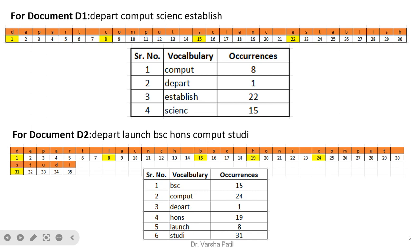For document D1, four words occur at locations 8, 1, 22, and 15 respectively. Vocabulary is generally maintained in ascending alphabetical order. For document D2 — department, launch, BSc, honors, compute, study — we find out the character location of each word. Vocabulary is again maintained in ascending sorted order, storing the occurrences of each particular word. In this way documents D1 and D2 are stored for inverted file indexing.